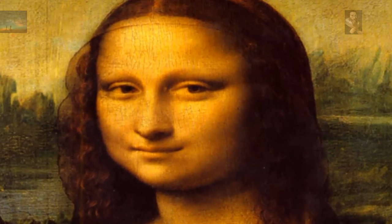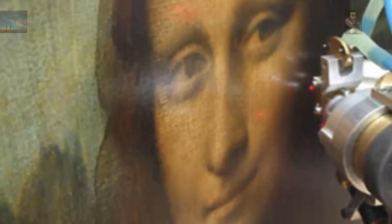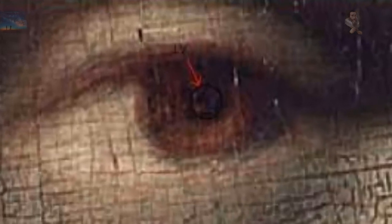However, when viewed under a microscope, historians in Italy have discovered that by magnifying the eyes of the Mona Lisa, tiny numbers and letters can be seen.